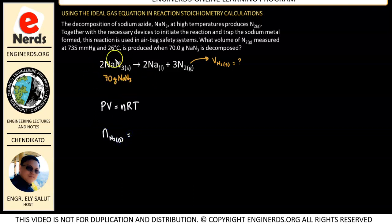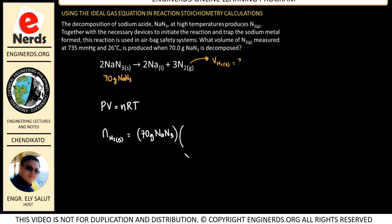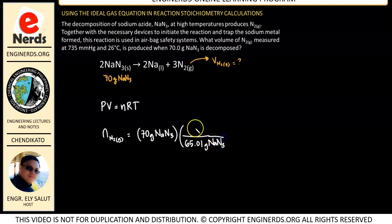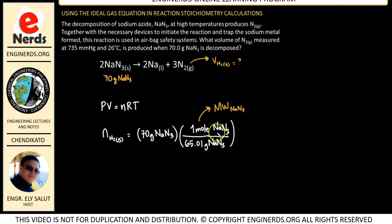We already know the amount of sodium azide that was decomposed, so we'll use the stoichiometric relationship of sodium azide to nitrogen gas. We have 70 grams of sodium azide, so we need to get the number of moles by dividing by its molecular weight. The molecular weight of sodium azide is 65.01 grams per mole of NaN3. So this gives us the number of moles of NaN3.